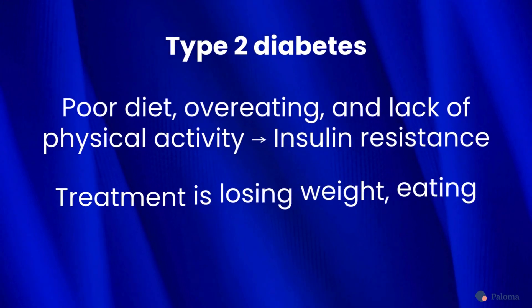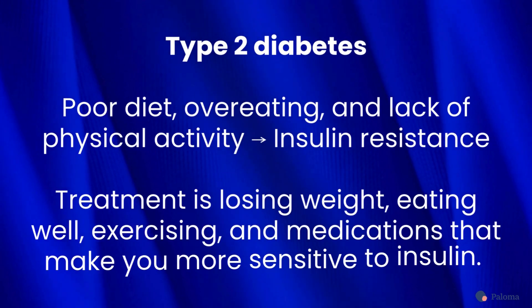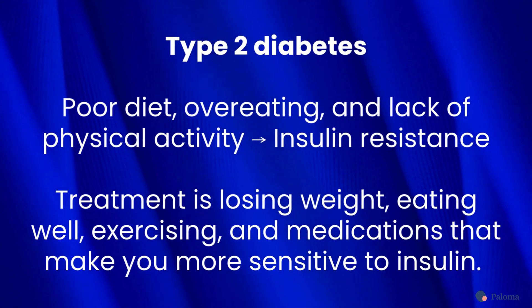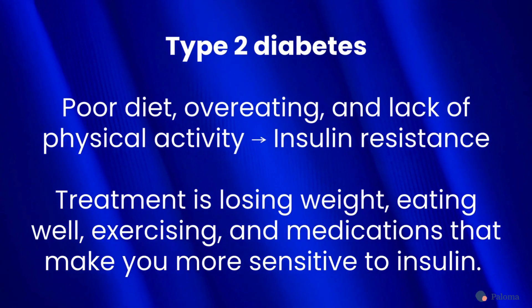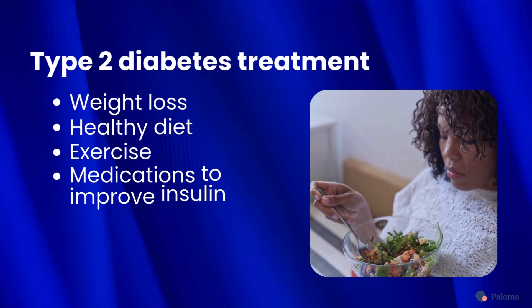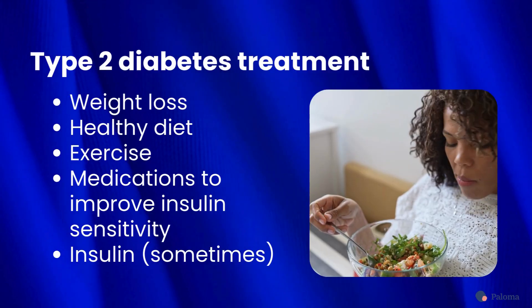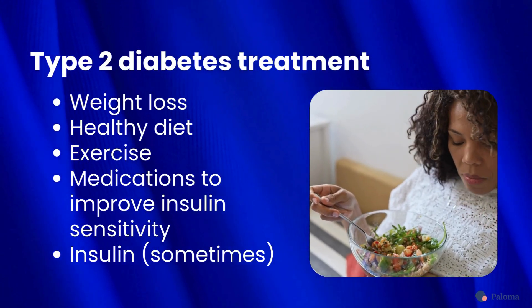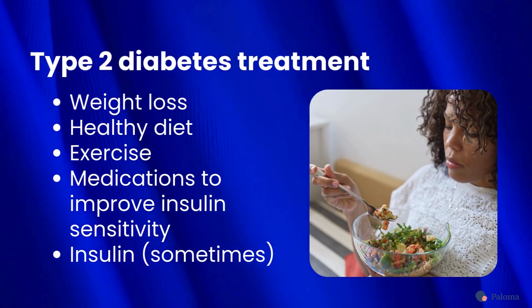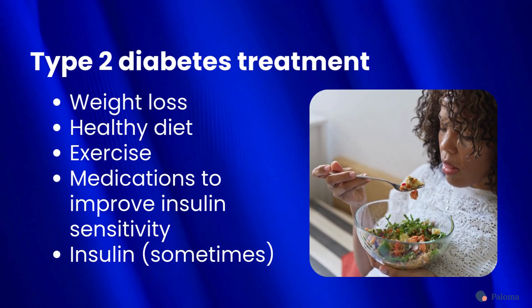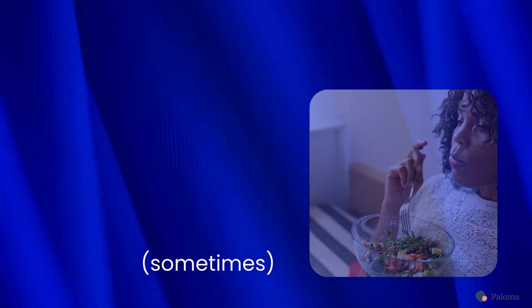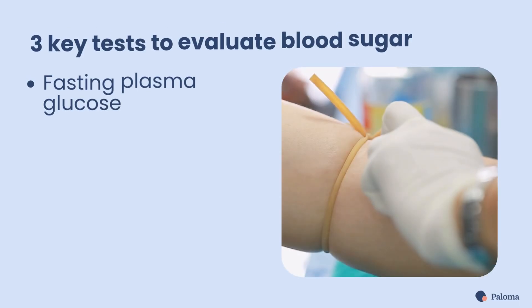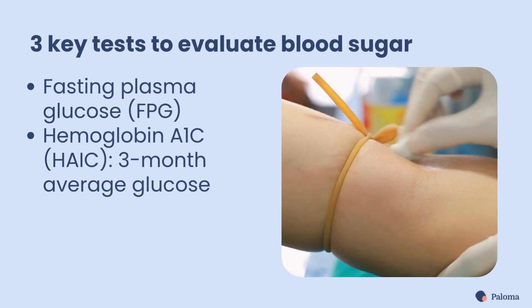Type 2 diabetes, the most common form of diabetes, is the result of insulin resistance, usually resulting from poor diet, overeating, and lack of physical activity. In some cases, type 2 diabetes requires insulin treatment, but more commonly the treatment is losing weight, eating well, exercising, and medications that make you more sensitive to insulin.